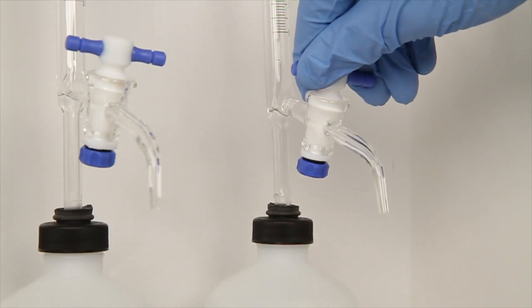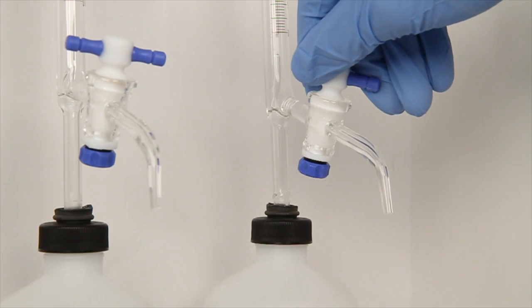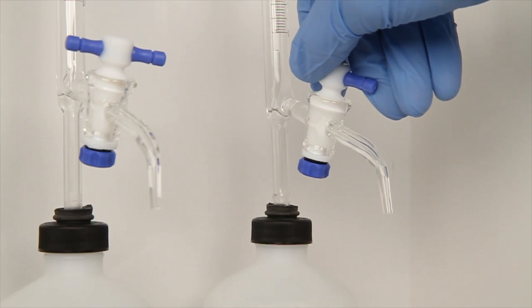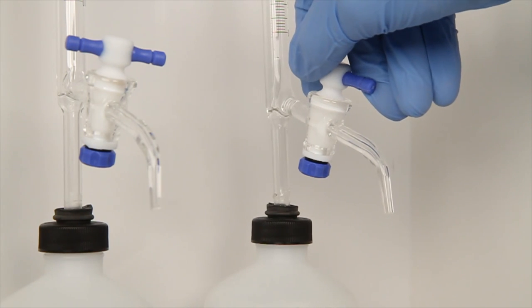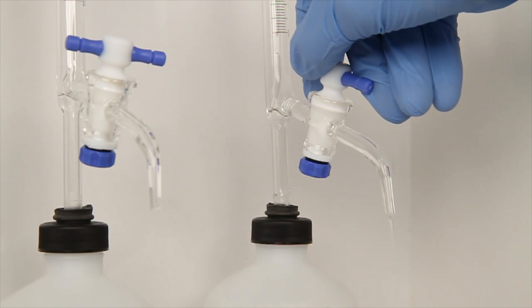The next step is to titrate the sample with the EDTA titrant using the burette. Turn the stopcock to add the titrant to your sample. Make sure you are mixing the sample while you add the titrant.